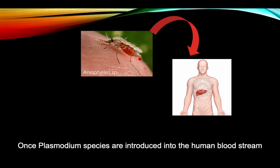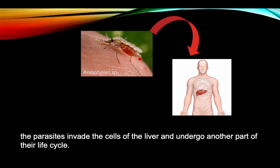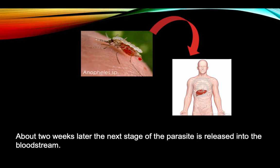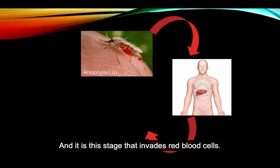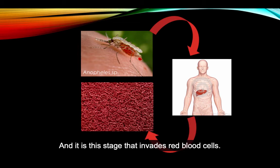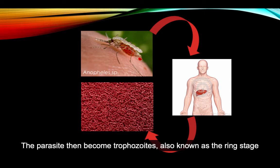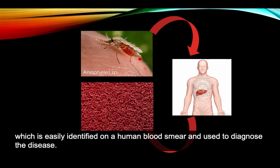Once Plasmodium species are introduced into the human bloodstream, the parasites invade the cells of the liver and undergo another part of their life cycle. About two weeks later, the next stage of the parasite is released into the bloodstream, and it is this stage that invades red blood cells. The parasites then become trophozoites, also known as the ring stage, which is easily identified on a human blood smear and used to diagnose the disease.